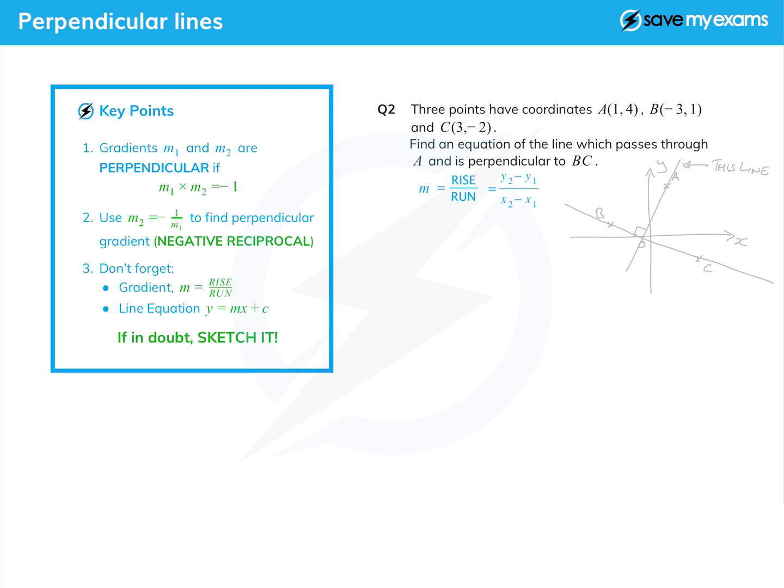Again we need to find a gradient and a point on the line. We have a point on the line so we just need to find the gradient. To do that we're first going to find the gradient of BC.